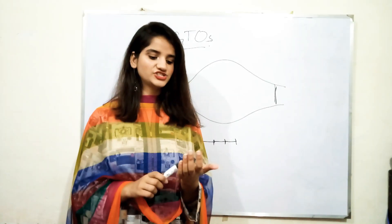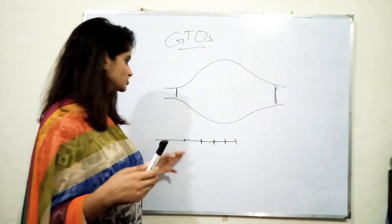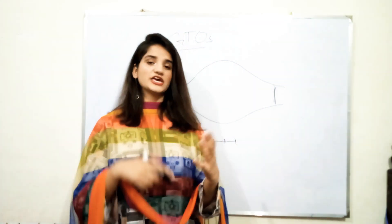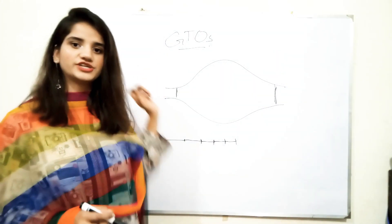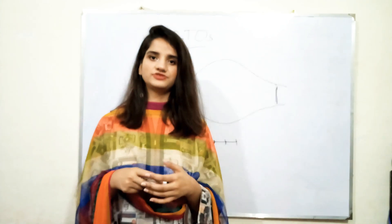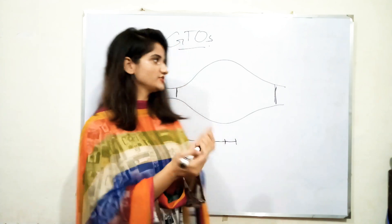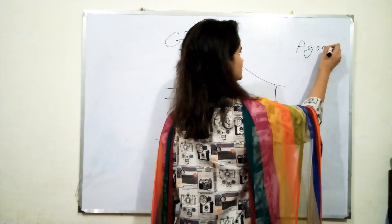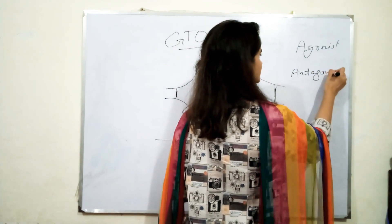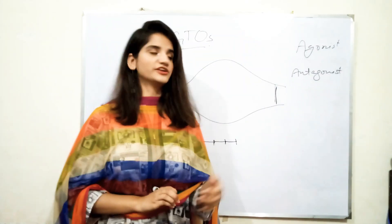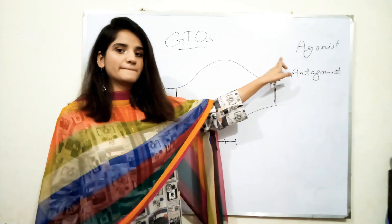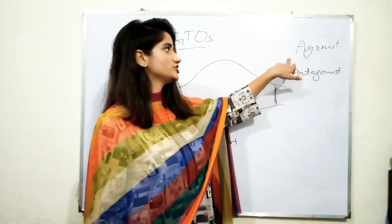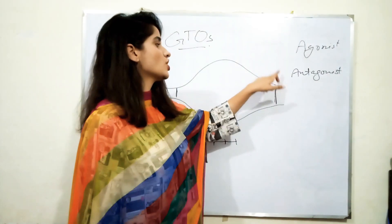Golgi Tendon Organs are stimulated by tension. For example, tension is produced in the muscle and they will be stimulated. Another way is passive stretch, but they have an increased threshold for stimulation by passive stretch. The effect produced by these GTOs is a neural activity response — they inhibit tension in the agonist and initiate tension development in the antagonist.